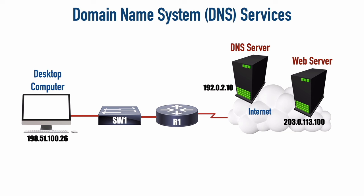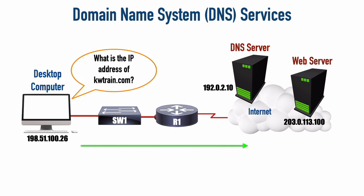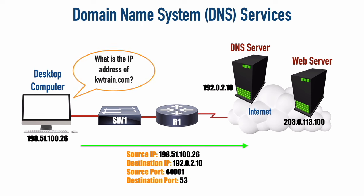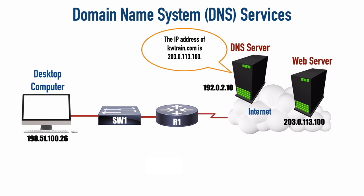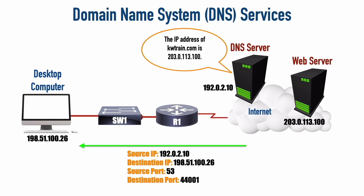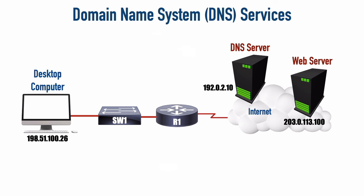So the desktop computer is going to ask the DNS server: can you tell me the IP address for kwtrain.com? It sends a message to that DNS server using port 53, which is what DNS uses, asking for the IP address of kwtrain.com. The server responds and says that address is 203.0.113.100. The desktop computer says thank you, and then sends out its message to the web server.